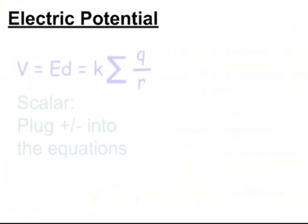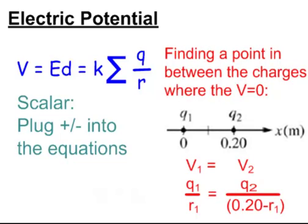Electric potential is scalar as well, and that's where V equals ED — or you can memorize it as 'Victor has erectile dysfunction.' It also equals K times the sum of Q over R. Again, plug those positives and negatives in and just add them up. A common problem type asks you to find a point between the charges where the voltage equals zero. You set one Q over R equal to another Q over R, making an equality with the R values — one is R1 away from Q1, and the other is 0.2 minus R1. If you bring any charge to that zero-voltage point, the work or energy equals zero joules. That's our electrostatics.